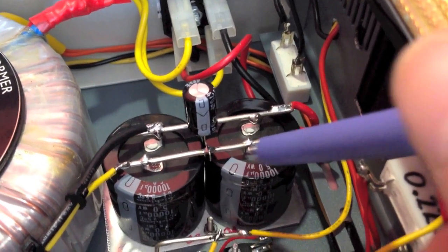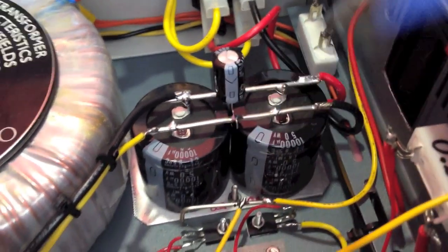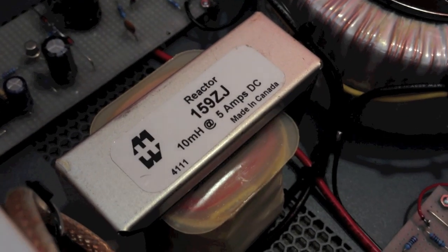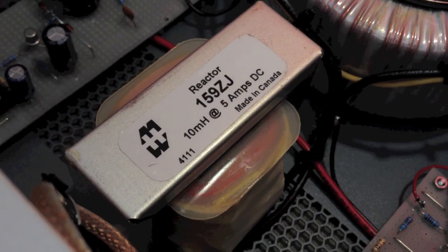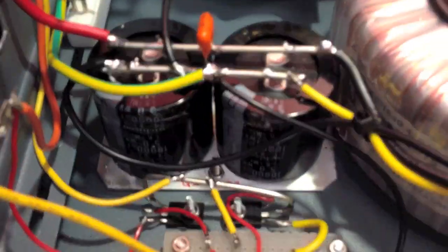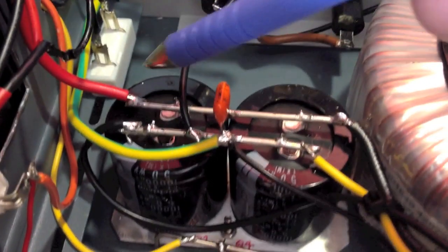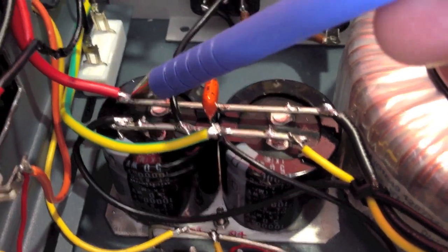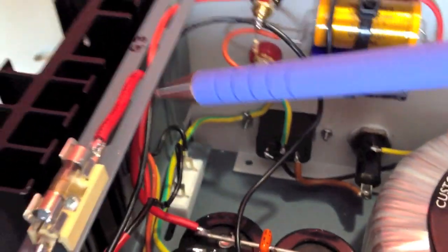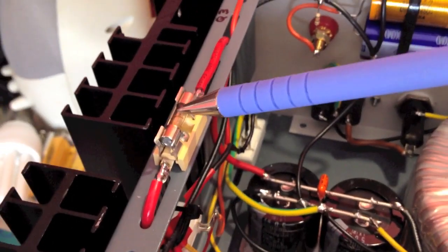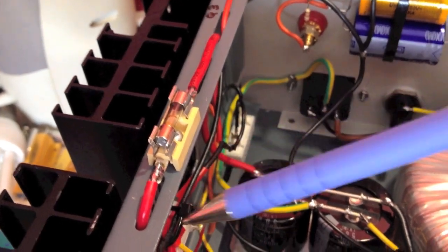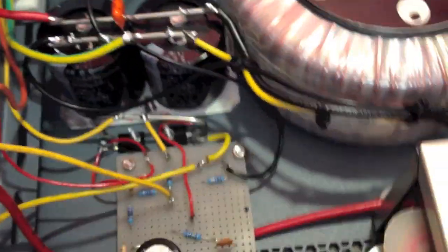From the rectifier it goes across two 10,000 microfarad 50 volt capacitors, then through a 10 millihenry 5 amp DC filter choke to take any ripple out, then across another two 10,000 microfarad 50 volt capacitors. There's our 30 volt output which goes through a 4 amp quick blow fuse.